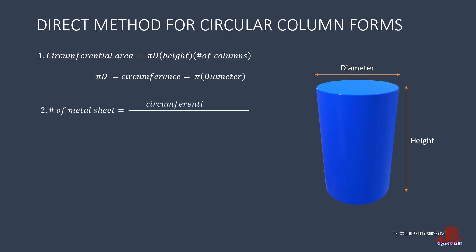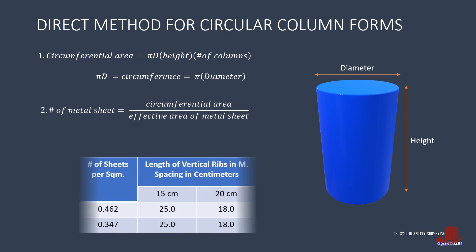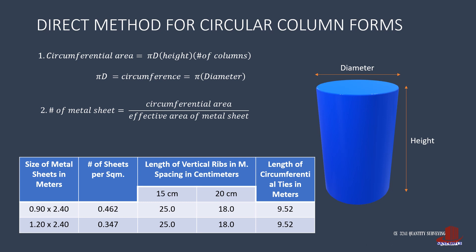Next is to solve for the number of metal sheets as the circumferential area all over the effective area of a single metal sheet. The vertical ribs and circumferential ties are determined through the table, which contains the different sizes of metal sheets available.